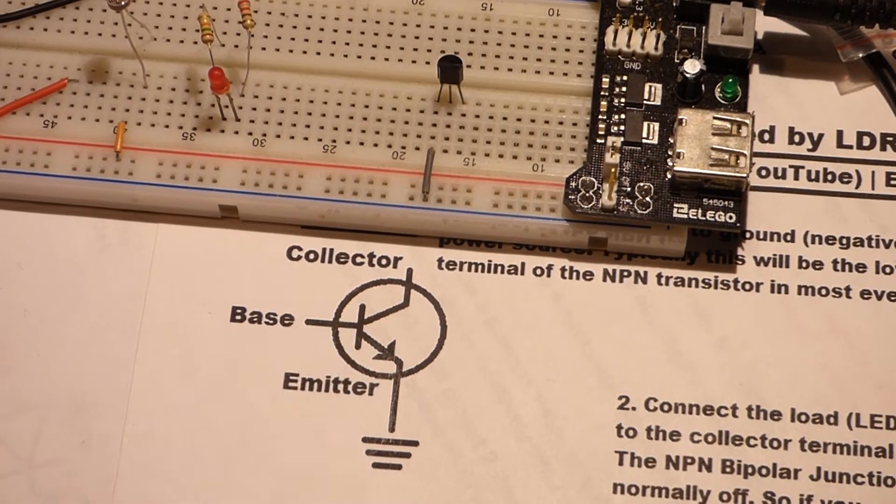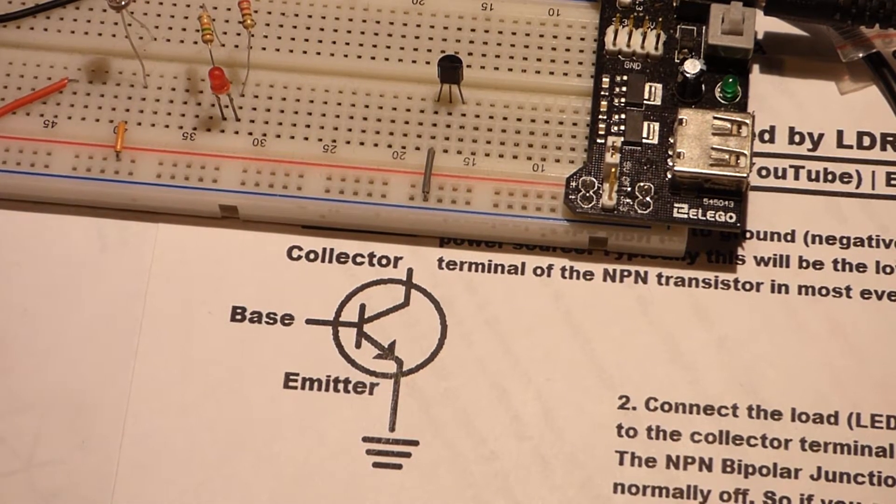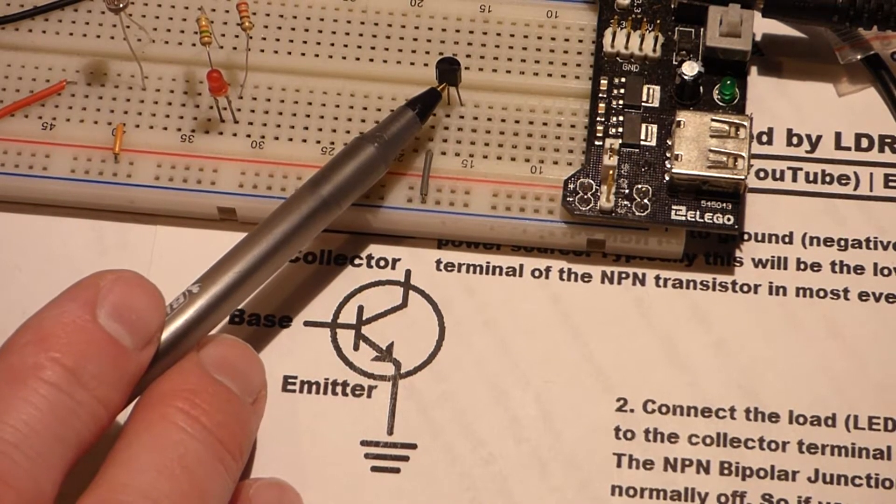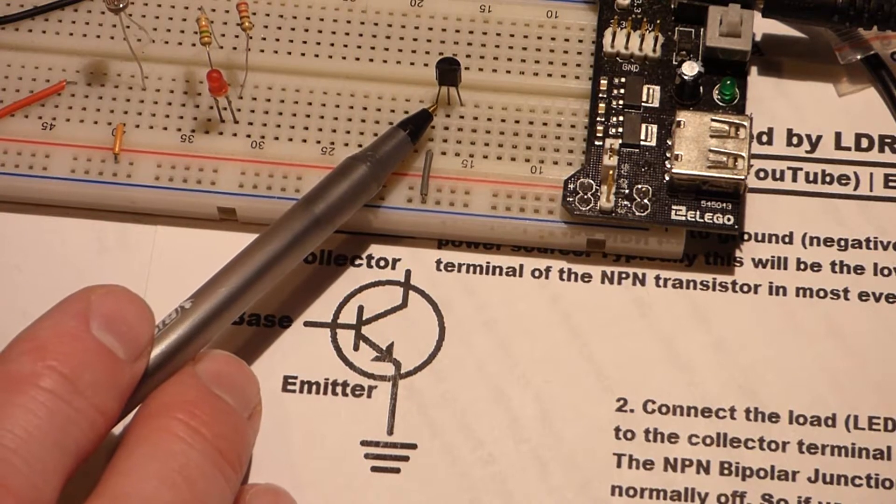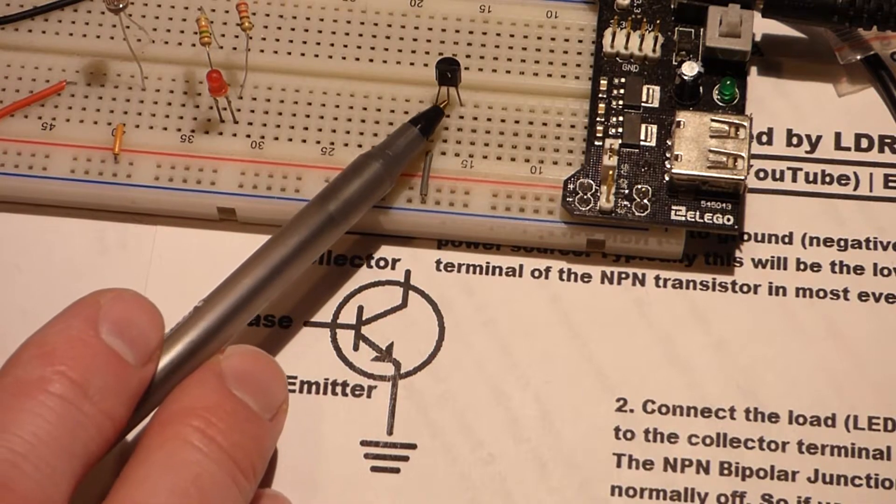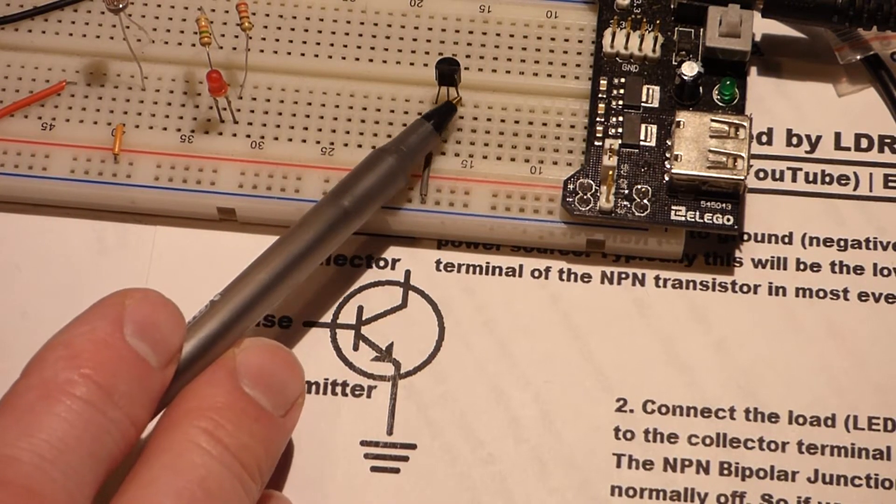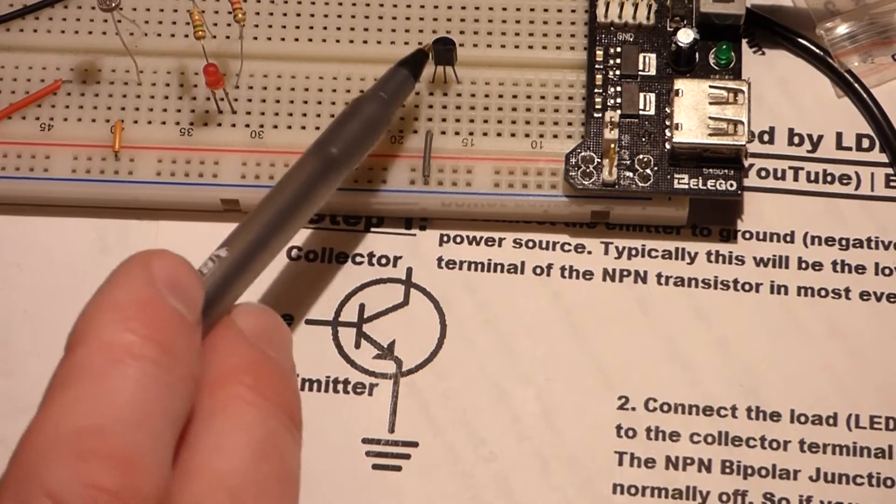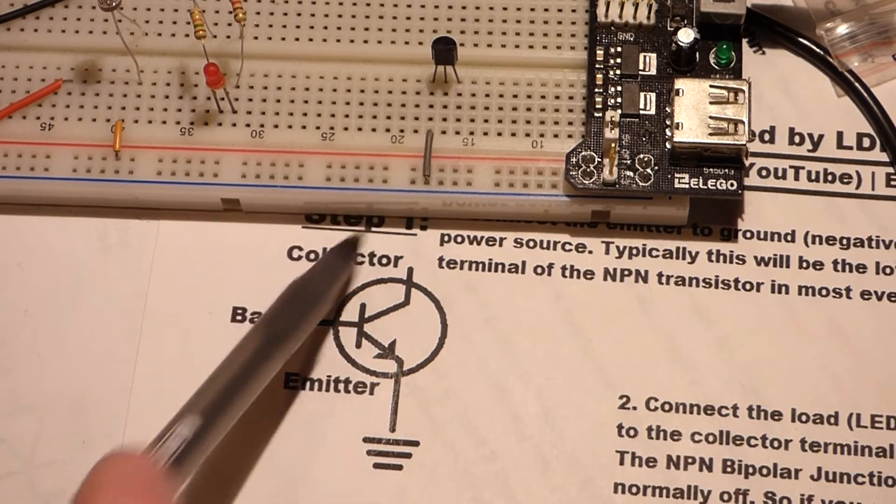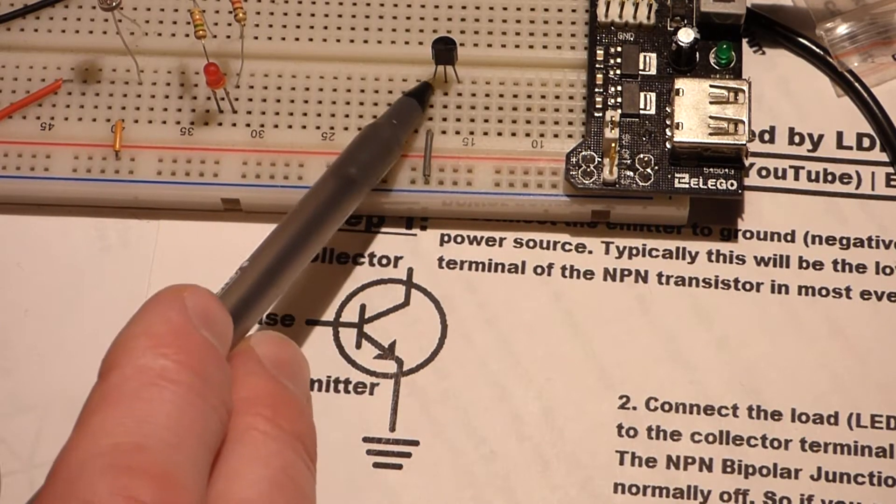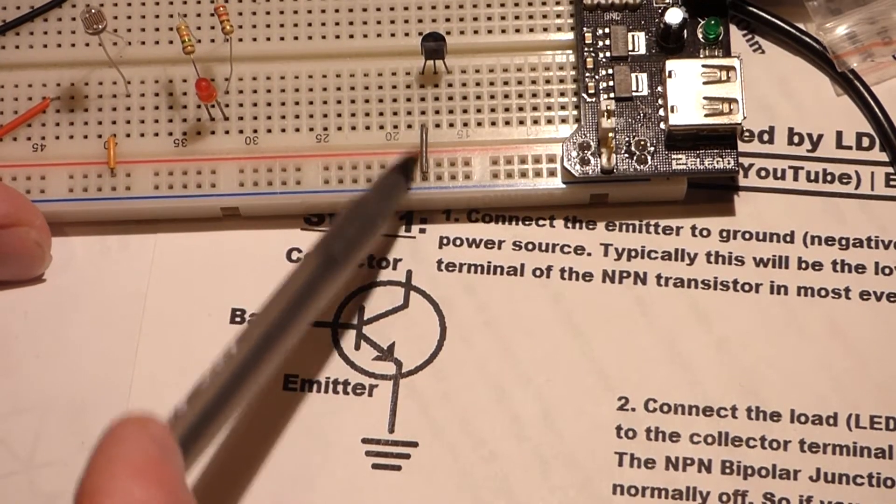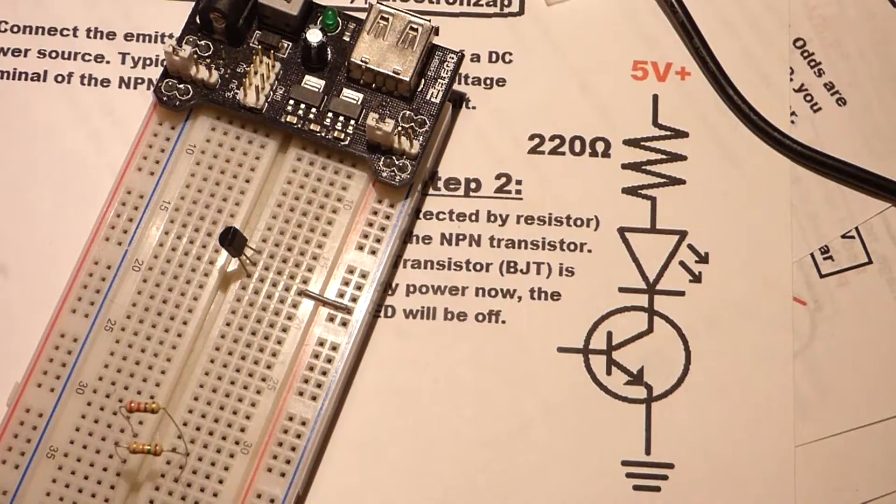If it was pointing in, it would be a PNP transistor. So moving along, this is a 2N3904. That's the name of the transistor. And I think every bipolar junction transistor that starts with 2N, the flat side is facing us, by the way. The right one here is the collector. The middle one is the base. And the left one is the emitter. And as you can see, the left pin here, the emitter, we have connected directly to ground.